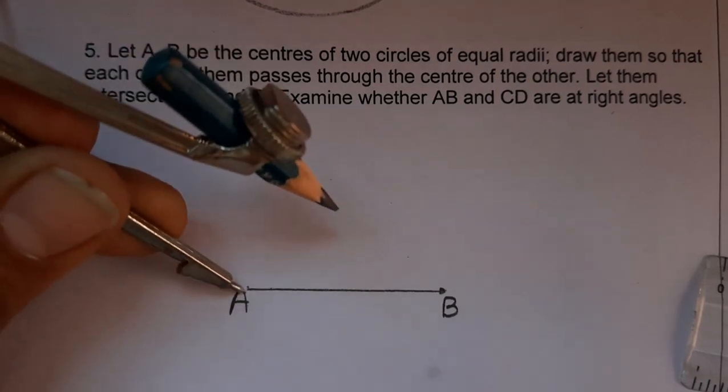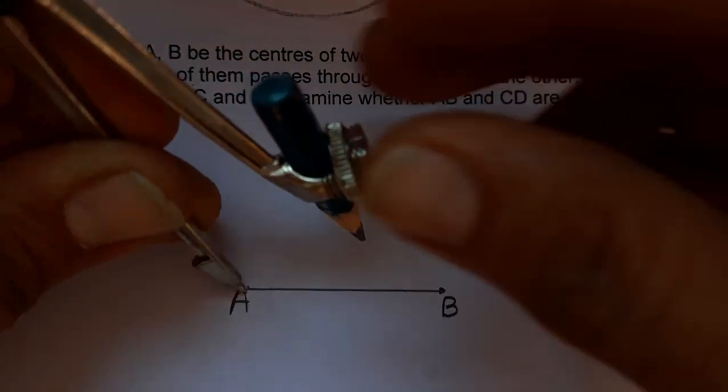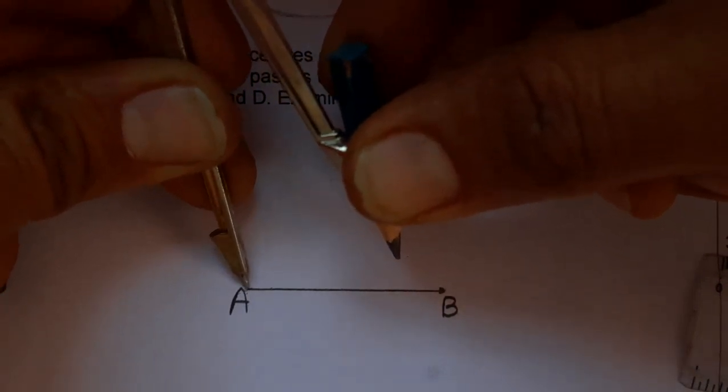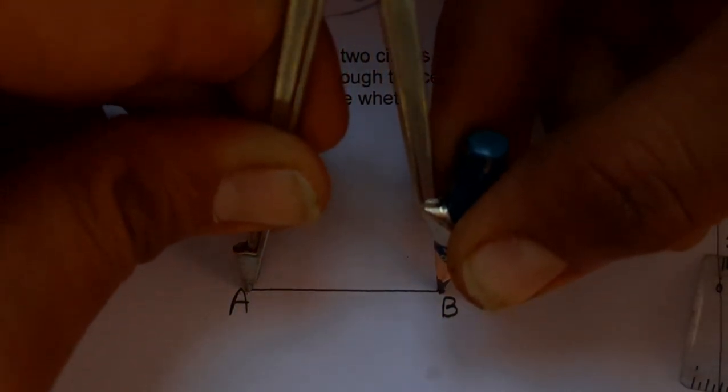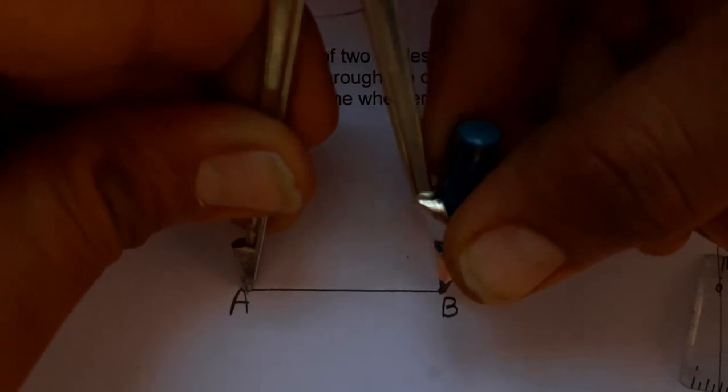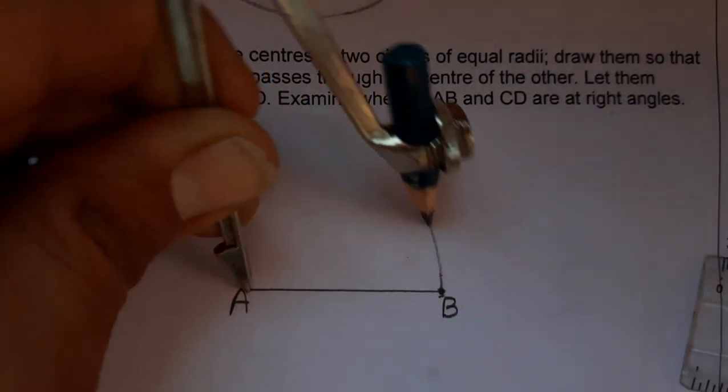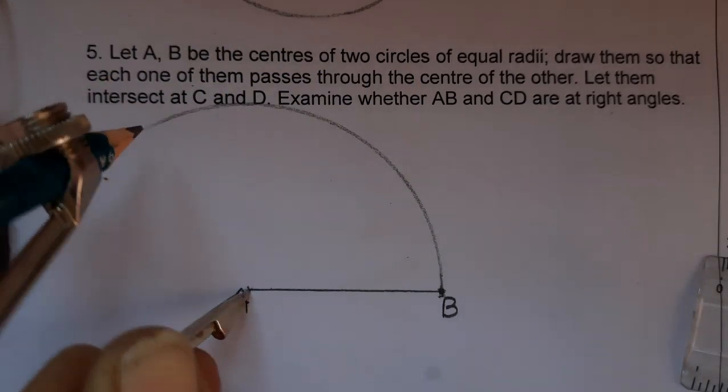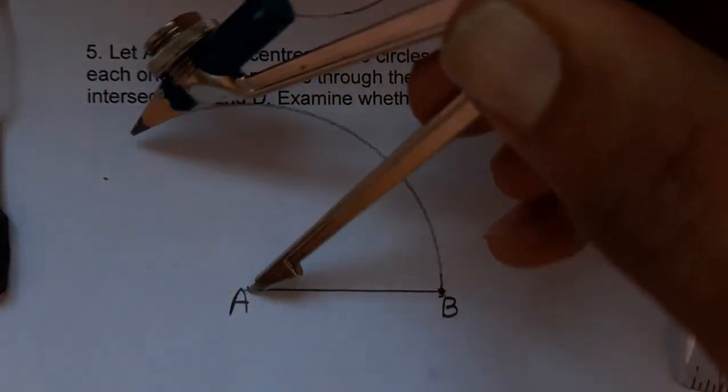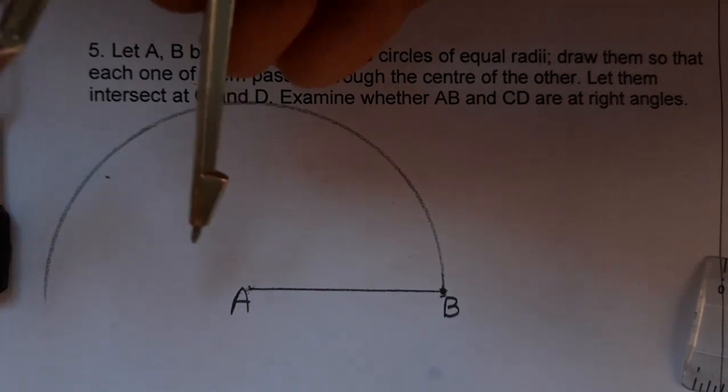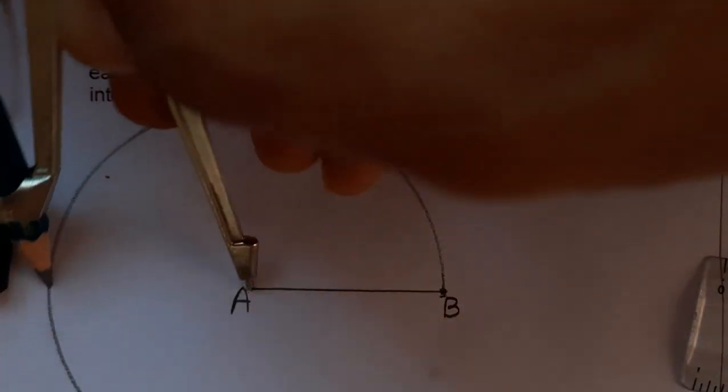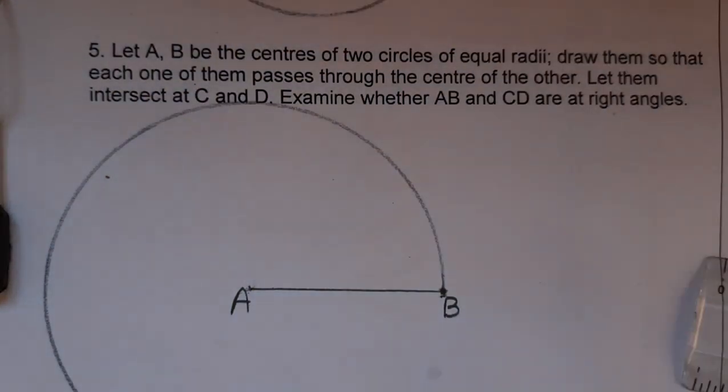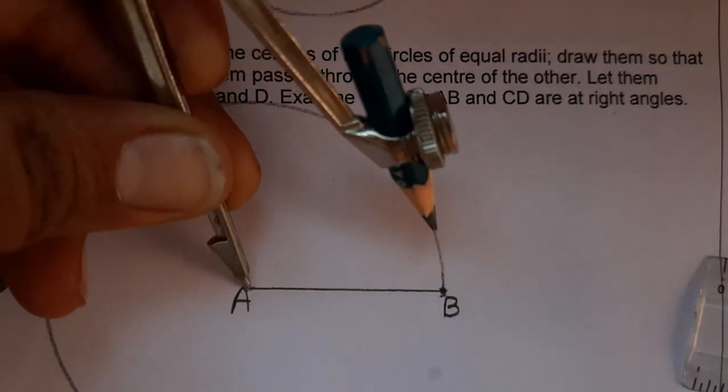Take the center as A and radius AB, and draw a circle from here.